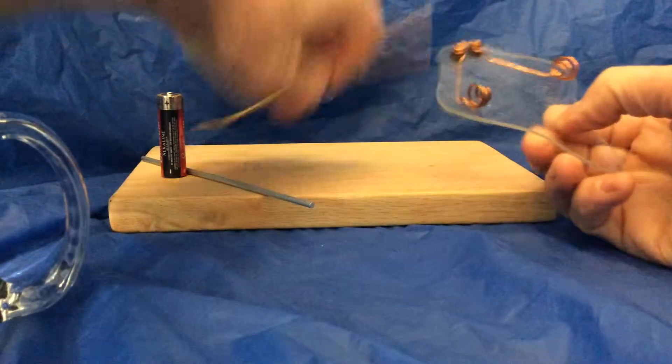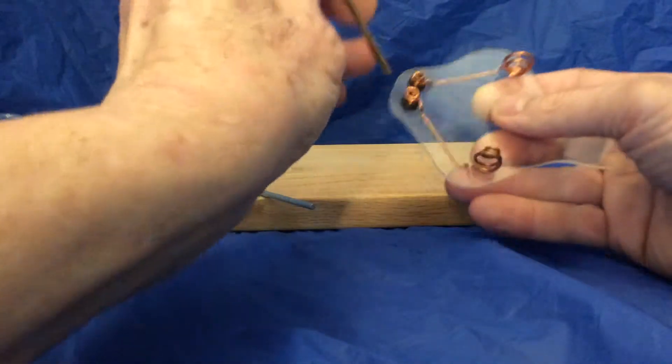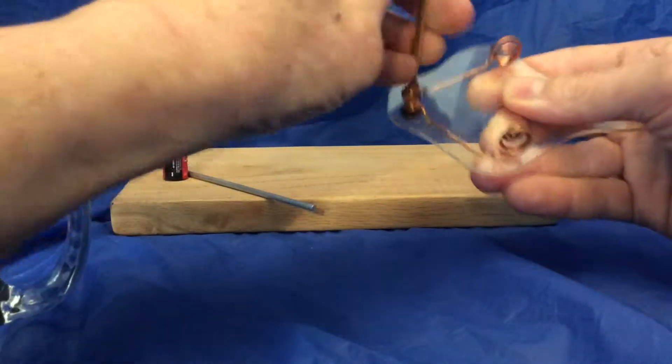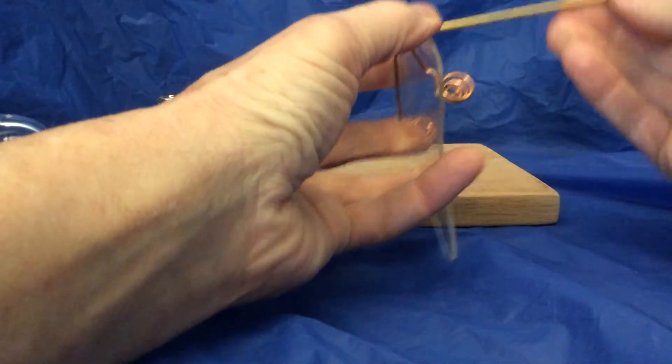So we have a copper rod. Go into the top. Wiggle it down through. Twist it a little bit.